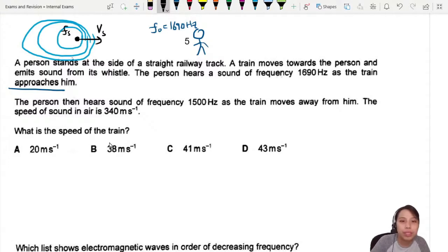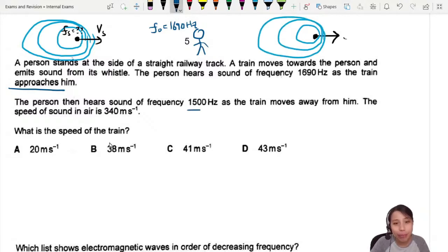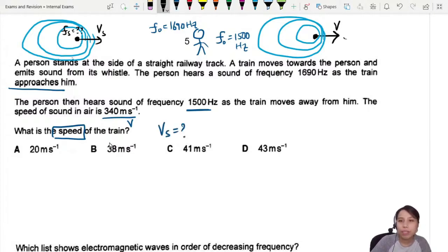What's the source frequency? We don't know. Then the train moves away. The train is moving away, still giving out the sound. Now the person will hear something else, a different frequency. When it's moving away, the person will hear 1500 Hz. They give us speed of sound in air, which is v. What is the speed of the train, also known as the speed of source?